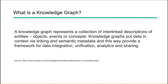So what is a knowledge graph? This is a really good definition from ontotext.com. They say a knowledge graph represents a collection of interlinked descriptions of entities — objects, events, concepts — and puts that data into context via linking as well as semantic metadata. This provides a framework for data integration, unification, analytics, and sharing. After reading that definition, I understand there's a little bit of intensity in it, but it's a really good definition, so let's break it down a little bit further.